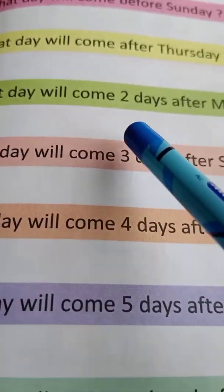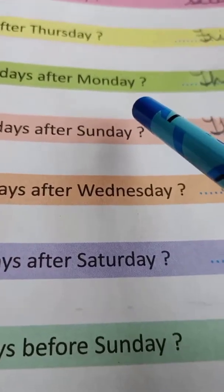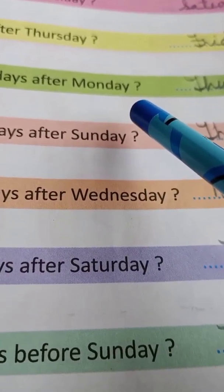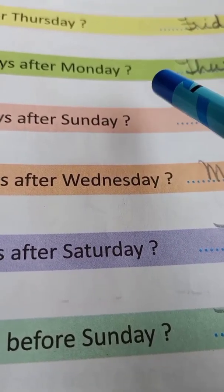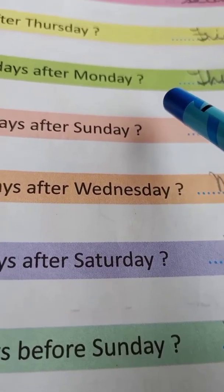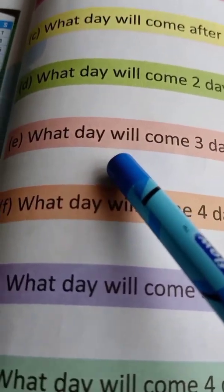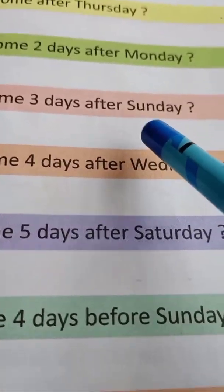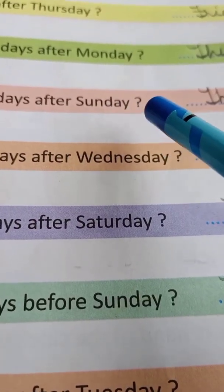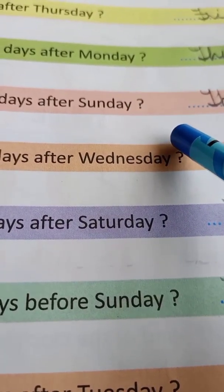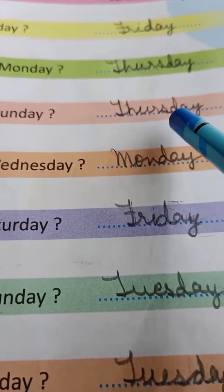What day will come two days after Monday? Count two days after Monday: Tuesday, Wednesday — and the next day is Thursday. Then, what day will come three days after Sunday? Count three days after Sunday: Monday, Tuesday, Wednesday — and which day will come after three days? Thursday.